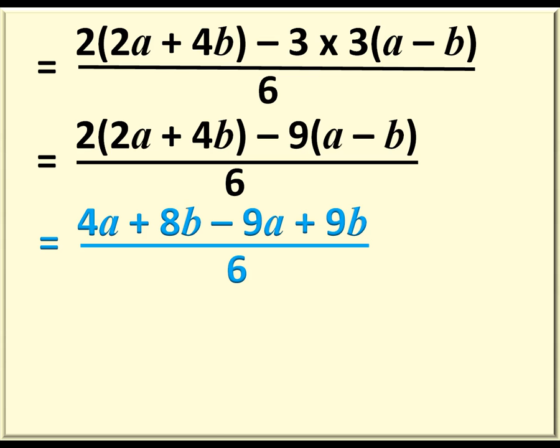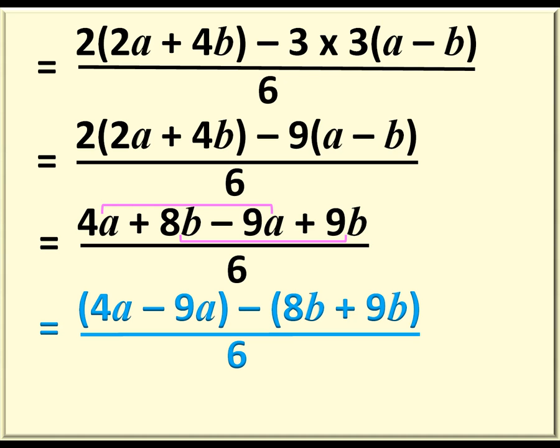Here, grouping into like terms, we have 4A minus 9A minus 8B plus 9B over 6.